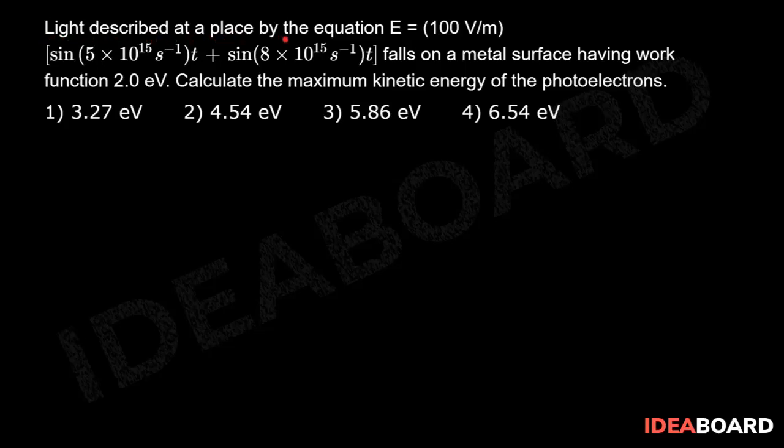Light described at a place by the equation E equals 100 volt per meter, sin 5 times 10 power 15 per second t plus sin 8 times 10 power 15 per second t, falls on a metal surface having the work function 2.0 electron volt. Calculate the maximum kinetic energy of the photoelectrons.